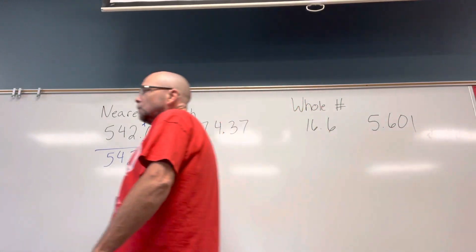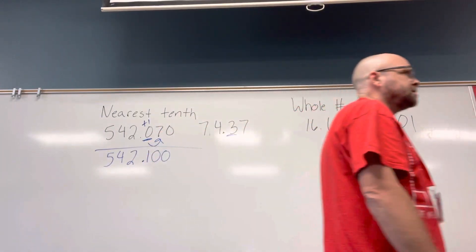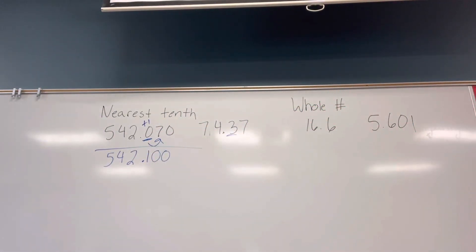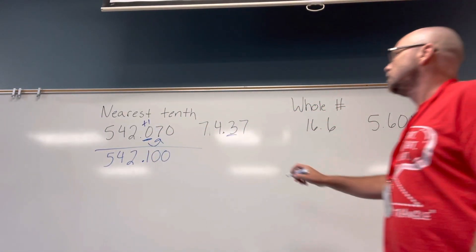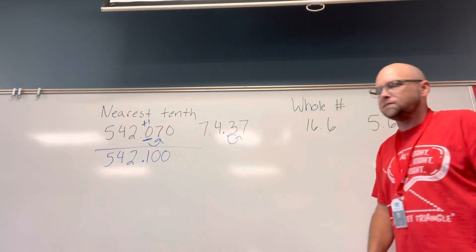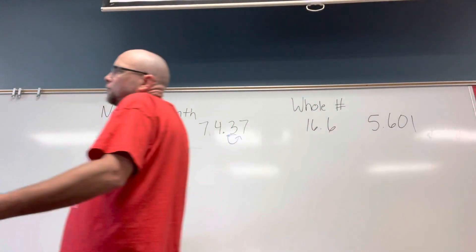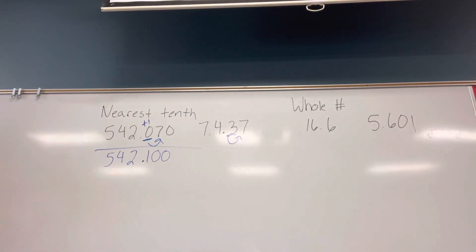We're going to round seventy-four and thirty-seven hundredths to the nearest tenth. What's in the tenths place, sir? The three. The three. The three is in the tenths place. So now, since I'm rounding to the tenths place, I look behind it into the hundredths place. Now, what am I going to do to the three? Anybody? Round it up to four. Okay? I'm going to add one to it.